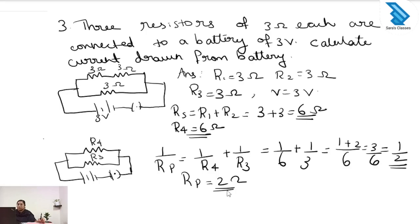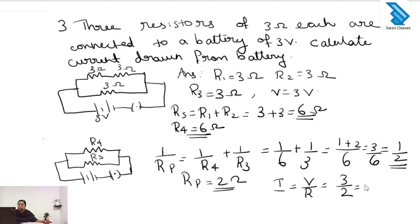Next we have to find the current drawn from the battery. I equals V divided by R. V is 3 volt and the resistance is 2 ohm, so the answer is 1.5 ampere.